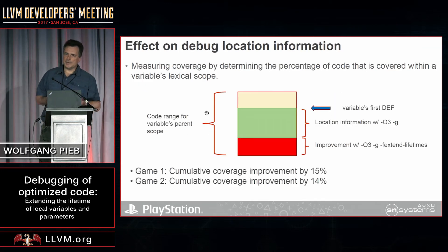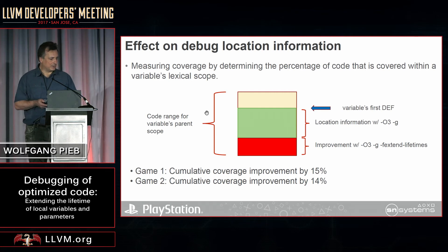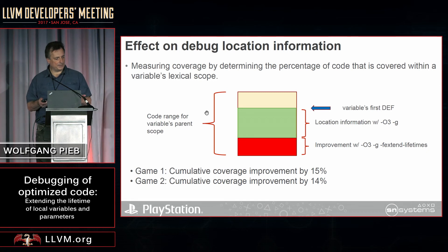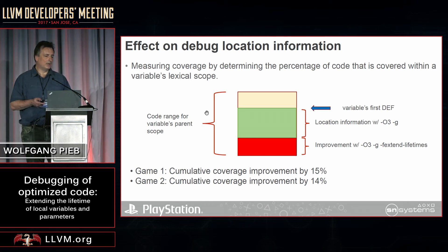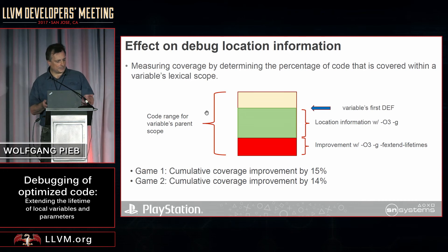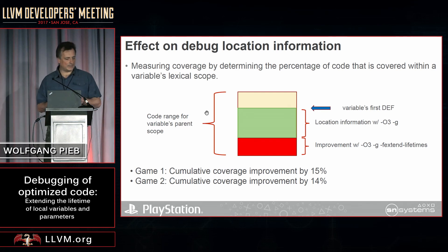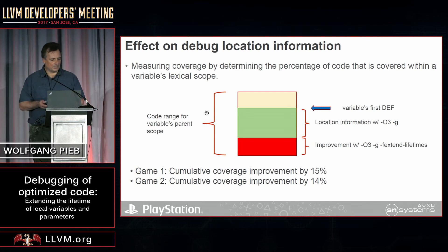We tried to quantify the effect this had on debug location information using a relatively simple measure: we measured the percentage of code covered by location information versus the code that corresponds to the lexical scope. When we accumulated that across all variables, we found an improvement of 14–15% depending on the game we compiled. For debugging optimized code, every little bit helps.